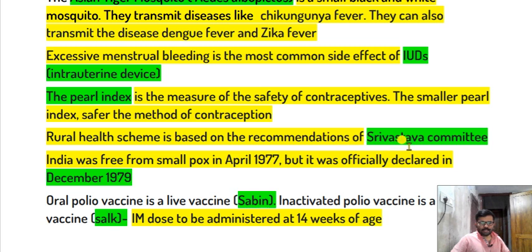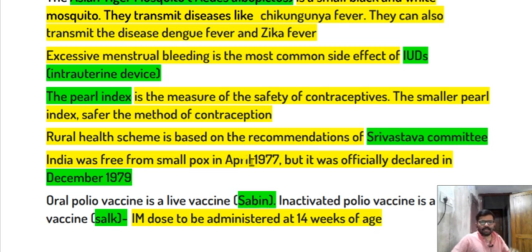This is based on the recommendations of the WHO. The world was declared free from smallpox in April 1977, and it was officially declared eradicated in December 1979.